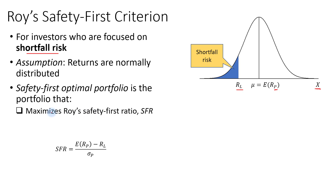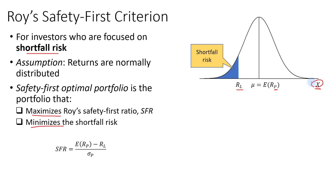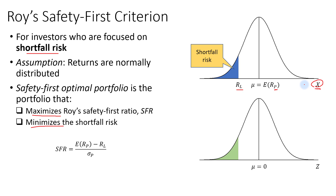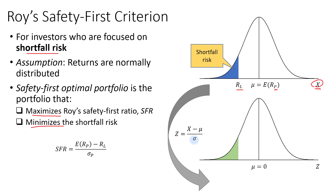This portfolio, if it maximizes Roy's Safety First Ratio, also minimizes the shortfall risk. To see why this relationship exists, we will transform the variable X into the standard normal random variable Z. We use the standard normal Z-score formula: Z equals X minus the mean, over the standard deviation.